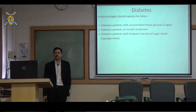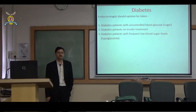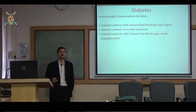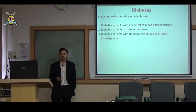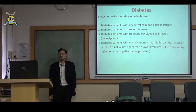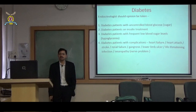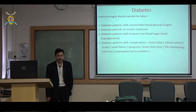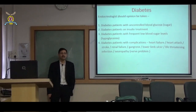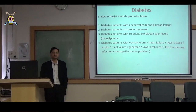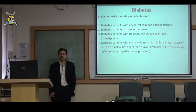Diabetes patients with frequent hypoglycemia definitely require endocrinology consultation — it's not just about overdose; there are many other causes of hypoglycemia to be looked into. Diabetes patients with complications like heart failure, heart attack, stroke, renal failure, gangrene, lower limb ulcer, life-threatening infection, or neuropathy require tight control with careful choice of drug and glycemic targets based on age and comorbidities — all requiring endocrinology consultation.